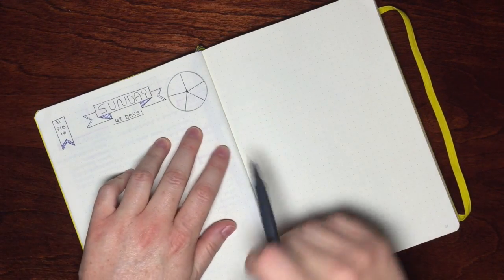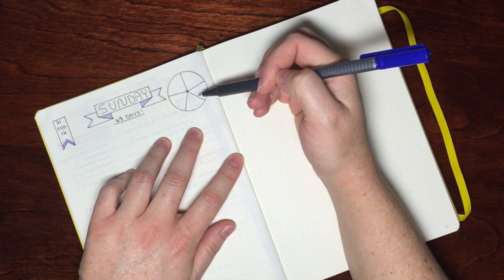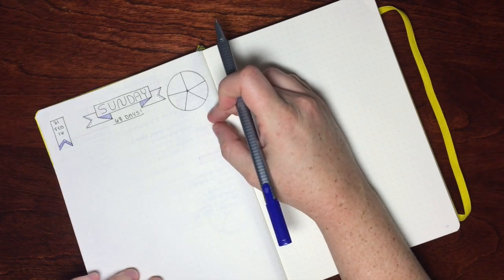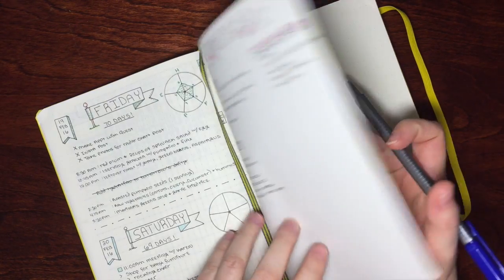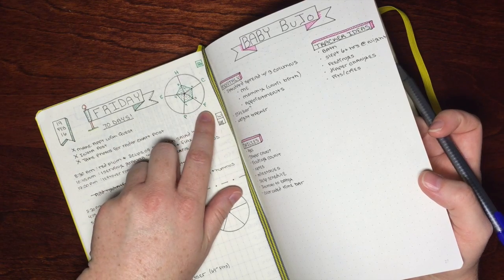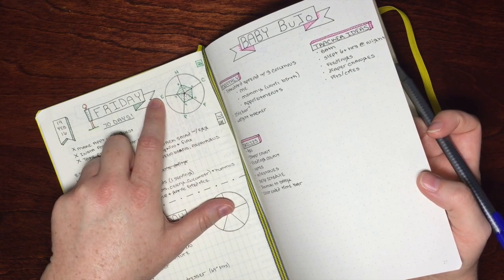Now Sunday has not actually happened yet so I'm not sure how I'm going to feel tomorrow. But what I will do is go ahead and set it up with the different categories. I have happiness, calmness, fulfillment, physical health, and energy.